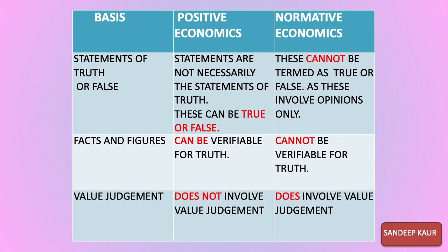Regarding statements of truth or false: positive economics includes facts and figures, so statements can be verified — for example, if someone says China's population is greater than India's, one can verify it as true or false using facts and figures. Normative economics does not involve truth or false statements as it only involves opinions of different economists. Positive economics involves facts and figures — such as the poverty example of 51% at independence, 22% at present, and possibly exceeding 22% in the future. Normative economics is just suggestions given by economists without any facts or figures.